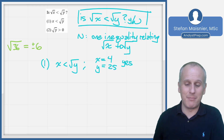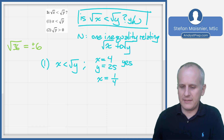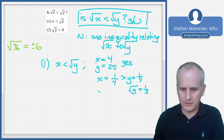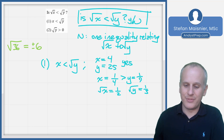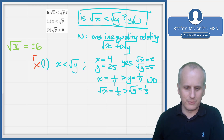But we also need to check if the answer could be no. If x equals one-fourth and y equals one-ninth, the square root of y is one-third, and one-fourth is still less than one-third — so condition 1 still holds. However, this time the square root of x is one-half, which is greater than the square root of y (one-third). So now the answer is no. Since we get both yes and no outcomes, condition 1 alone is not sufficient. We eliminate it, leaving answer choices B, C, or E.